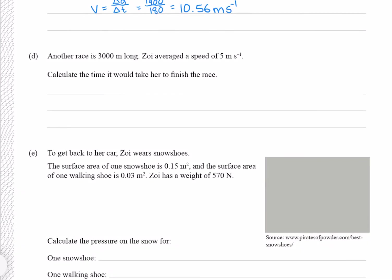Question D: Another race is 3000 meters long. Zoe averaged a speed of 5 meters per second. Calculate the time it would take her to finish the race. We have her change in distance and her velocity, and we're trying to find her time. We need the equation velocity equals distance over time, but we need to solve this for time. We can do that by swapping V and T around, which gives us time equals distance over velocity, which is 3000 divided by 5, which gives 600 seconds.